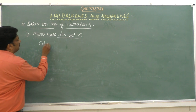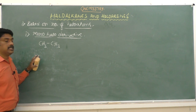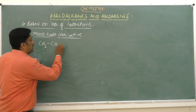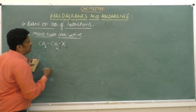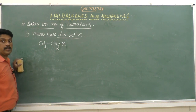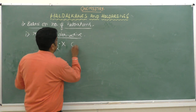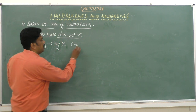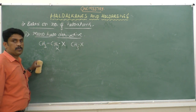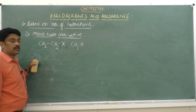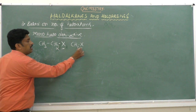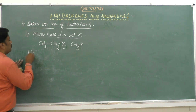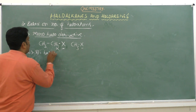For example, taking ethane CH3CH3, if we substitute one hydrogen by a halogen, it is a monohalo derivative. Taking methane CH4, if we replace one hydrogen by a halogen - fluorine, chlorine, bromine, or iodine - it becomes CH3X. These compounds contain only one halogen atom and are monohalo derivatives.